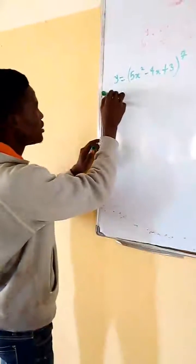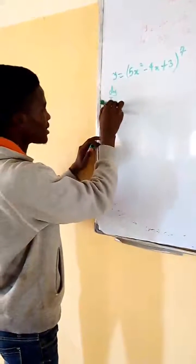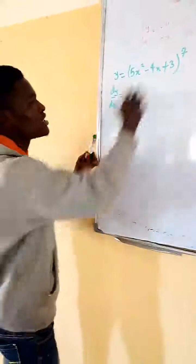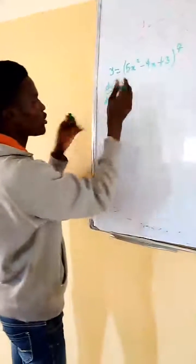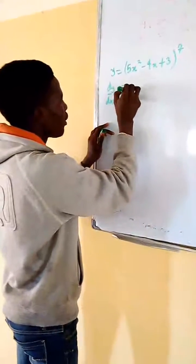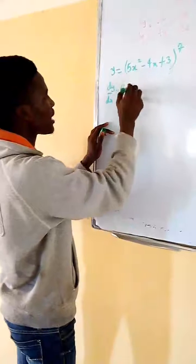The first thing you do is divide the x. Don't forget, I'm explaining the shortcut. The first thing is drop the power. The power is what? 7. Multiply by, differentiate the bracket. If you differentiate the bracket,